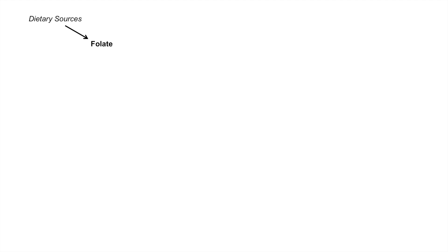Dietary sources are where we get our folic acid or folate. Folate can be acted on by the enzyme dihydrofolate reductase, or DHFR, to form dihydrofolate or DHF. This enzyme requires NADPH, which gets oxidized to NADP+, so we remove electrons and we get dihydrofolate. NADPH acts as an electron donor and comes from the pentose phosphate pathway.